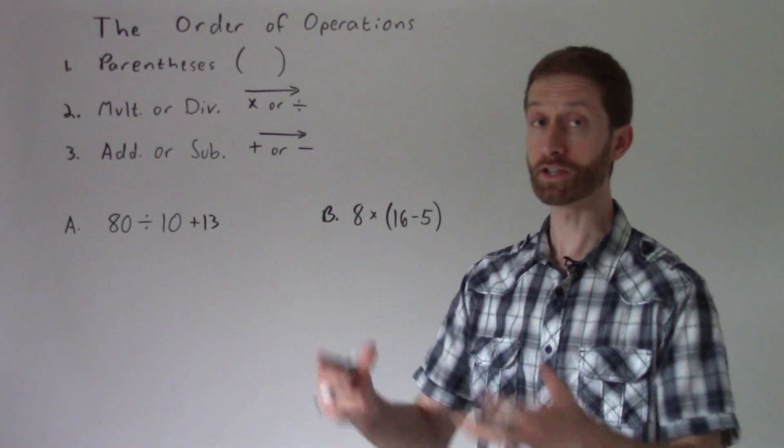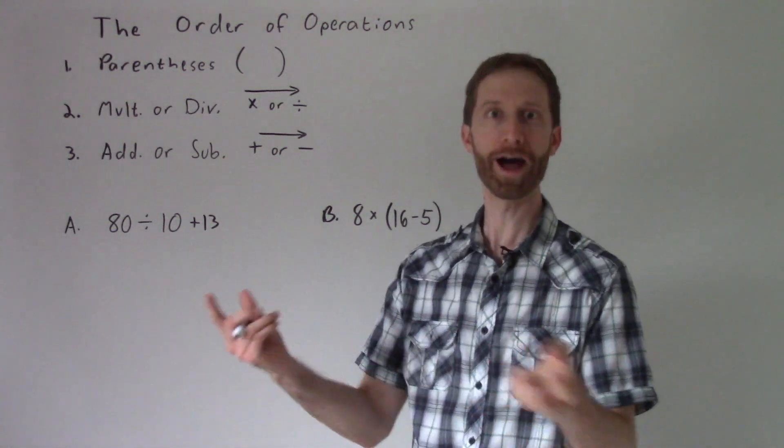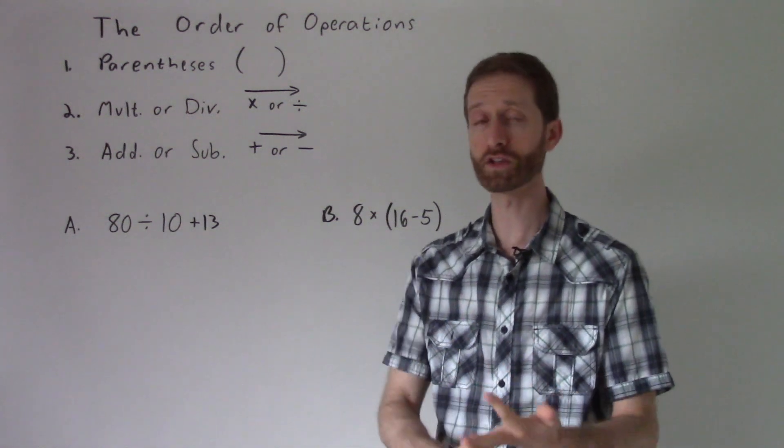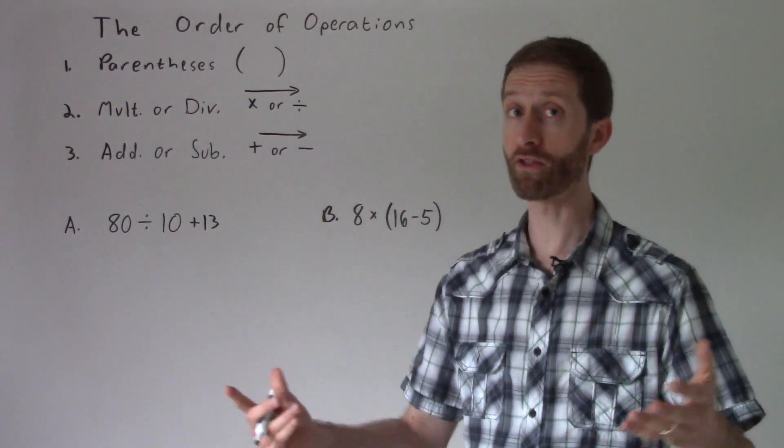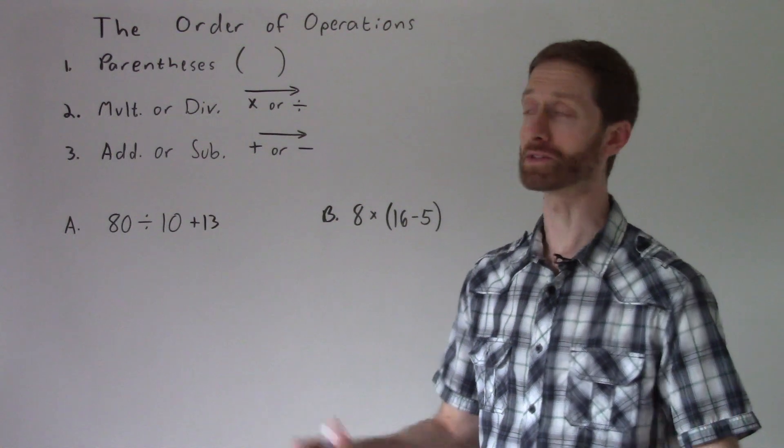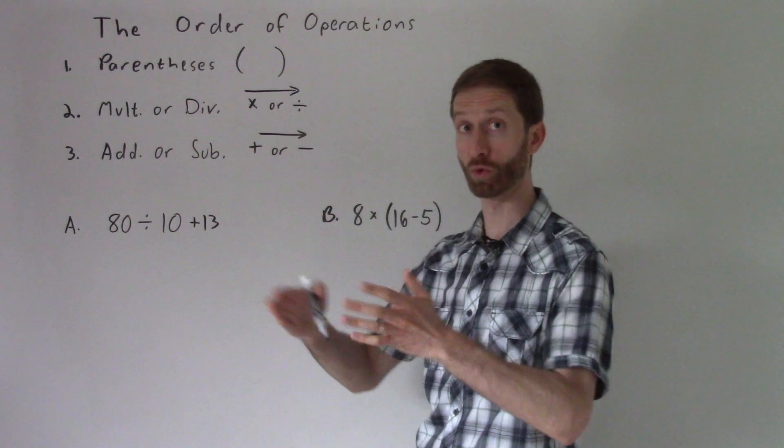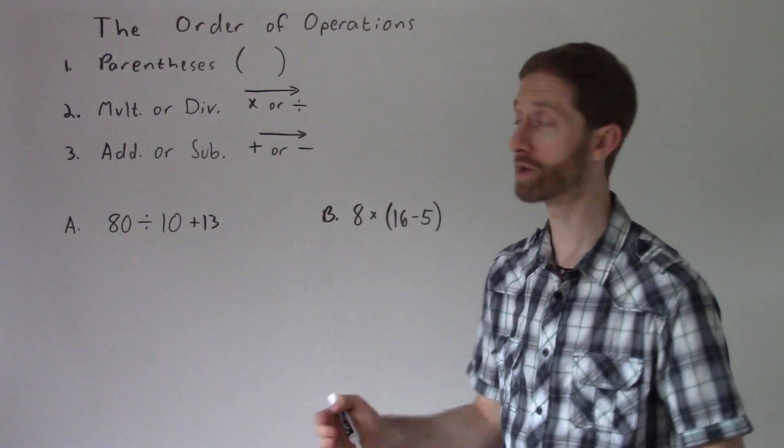The order of operations is the order by which we do operations. Those operations being parentheses, multiplication, division, addition or subtraction, and down the road, exponents. So I've given you this little chart here to remind you that parentheses come first in our rules of how we do the order of operations.